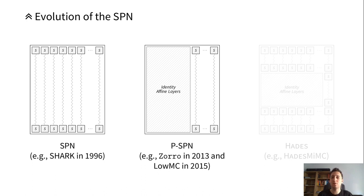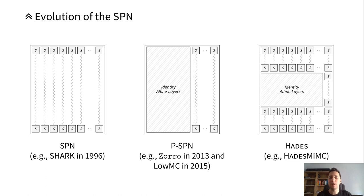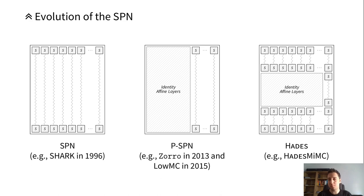Going one step further, we have a mix between these two, and this is the HADES strategy which I will talk about in this presentation. The idea is to mix the classical SPN with the partial SPN. We have full non-linear layers at the beginning and at the end of the construction, but in the middle we have partial rounds where basically only a single S-box is applied in each round. This is the idea of HADES.